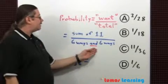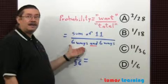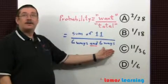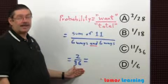In mathematics, the word and tends to mean multiply. So there are 6 ways for one die and 6 ways for the other. 6 times 6 gives us 36 total possible ways of rolling two dice.